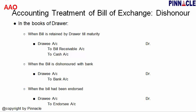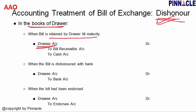Dishonor of a bill means the drawee is not able to pay — he does not honor his obligations. In that case the bill is dishonored. There are different cases for what the drawer entries would be. When the bill is retained by the drawer till maturity and is dishonored: the drawee was debtor whose account was cancelled when the bill receivable was received. Now the bill receivable has no value, so it must be credited to cancel it, and the drawee's account is debited again as a debtor.